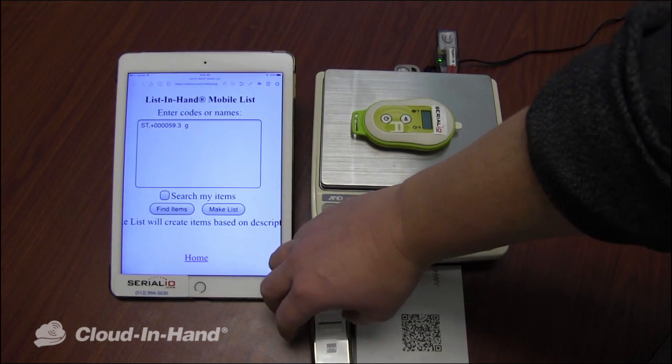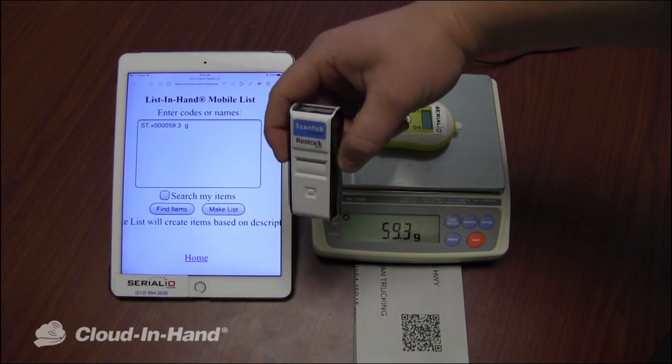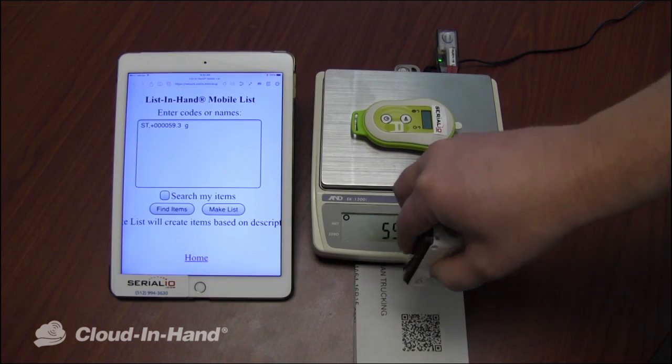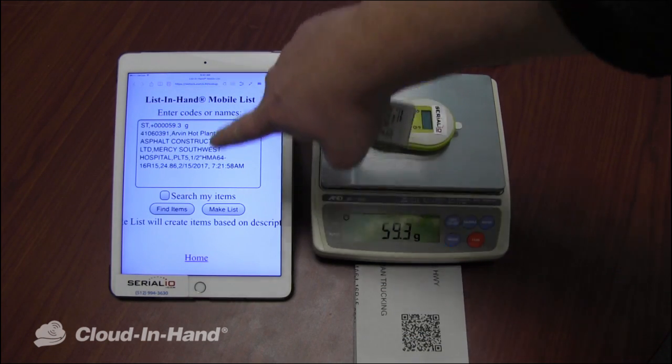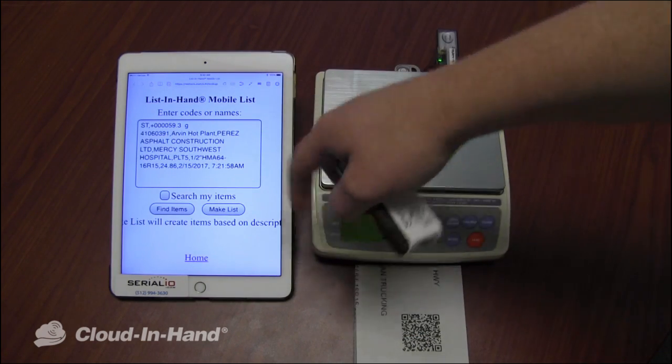I can work with multiple devices at once. This is a Bluetooth barcode scanner connected to the iPad. Scan this QR code. You can see a great amount of data posted instantly right into the correct form.